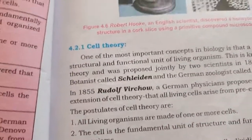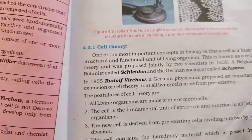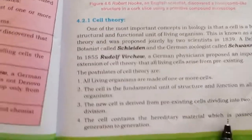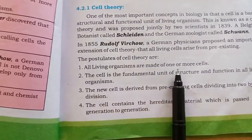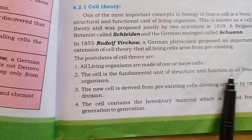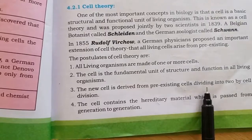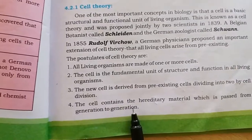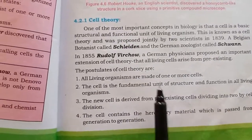Page number 57: What is cell theory? The observations of different scientists were combined by Schwann and Adolf Virchow to form cell theory. What are the main points of cell theory? There are four points. Number one: all living organisms are made up of one or more cells. Number two: the cell is the fundamental unit of structure and function in all living organisms. Number three: new cells are derived from pre-existing cells by cell division.